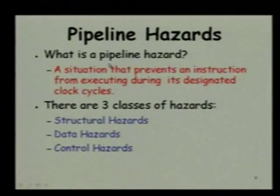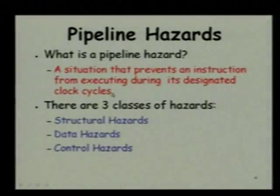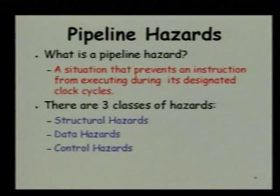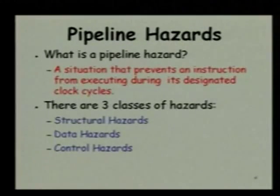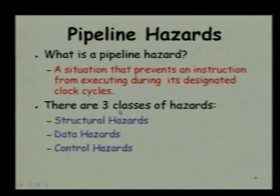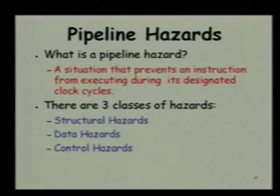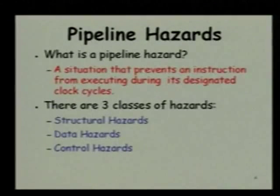Now, let us look at what is a hazard. A hazard is a situation that prevents an instruction from executing in its designated clock cycles. Each instruction as it flows through the pipeline is supposed to take certain clock cycles and complete, but sometimes we will be forced to stop an instruction and as a result it will execute in cycles other than what was required. There are three classes of hazards — this is a question normally asked during vivas: structural hazards, data hazards, and control hazards.